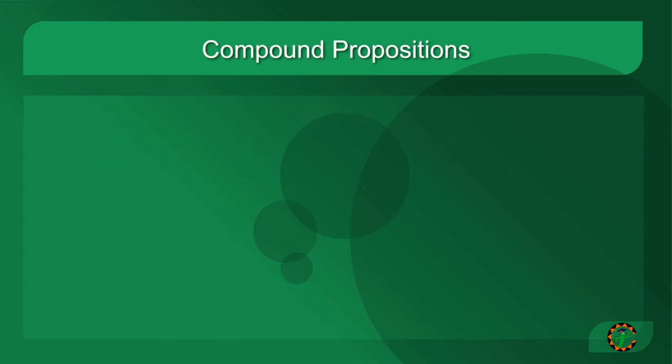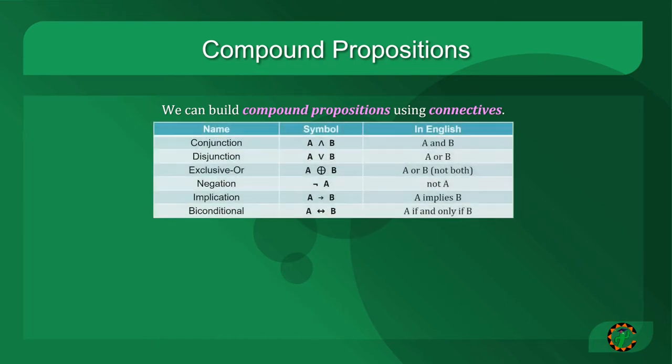We can also build what we call compound propositions using connectives. A connective is just a way that we join two propositions together in some logical way. The conjunction connective, also known as AND, uses a typical caret symbol. If we have a proposition A and another proposition B, the conjunction of A and B is typically read as A and B.